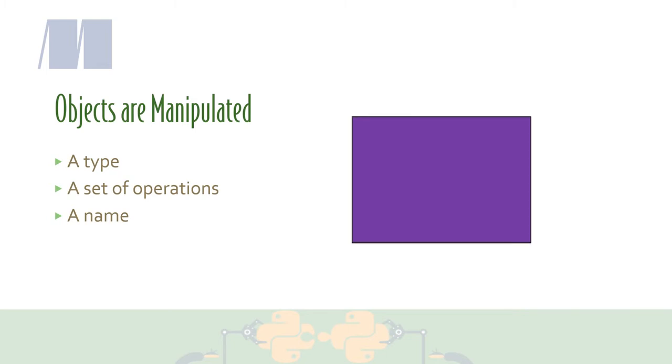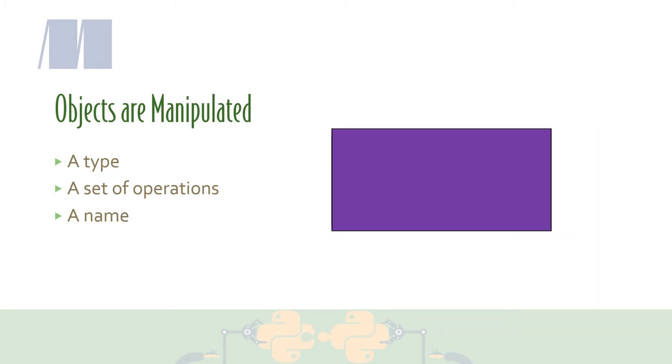The operations are the commands that you can tell the object to do. These commands might work only on the object itself, or they might be ways that the object can interact with other objects. All objects have a name. Names are variables and are used to refer to objects. For example, if a is equal to 1, then the object named a has the value 1. The kinds of operations that you can do on a are anything mathematical.